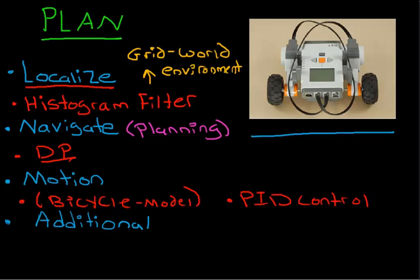So we'll actually use PID control to get this robot to drive in a straight line. Because if you don't, the errors actually accumulate.